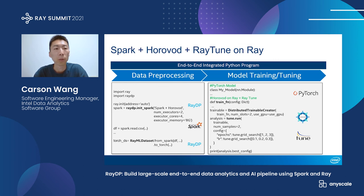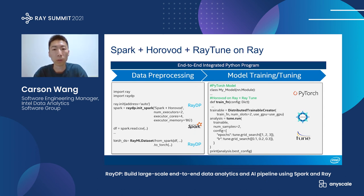The next example is to run Spark and Horovod on Ray and also integrate with RayTune to do hyperparameter tuning. The data preprocessing part will be the same. In the model training and tuning part, it's also straightforward to integrate with RayTune — we can follow the RayTune API and search over parameters like the number of epochs and the learning rate to get the better configuration for model training.